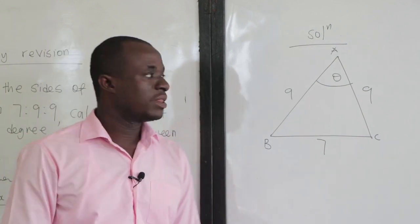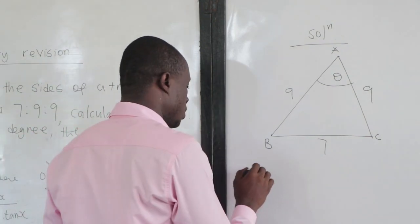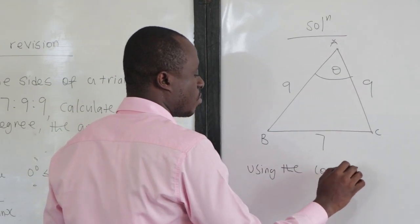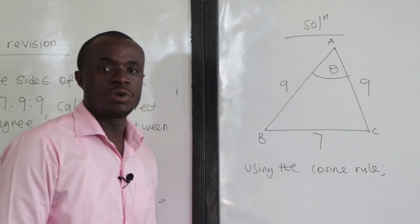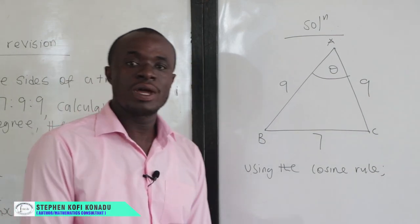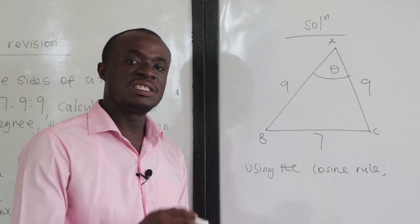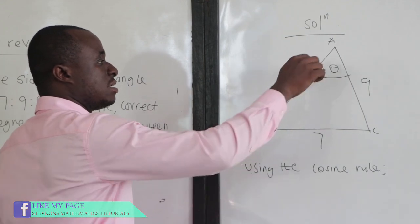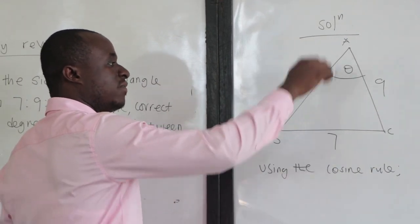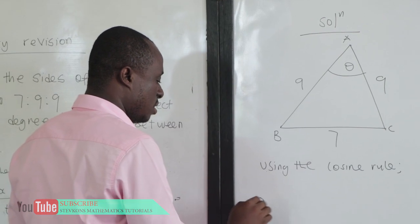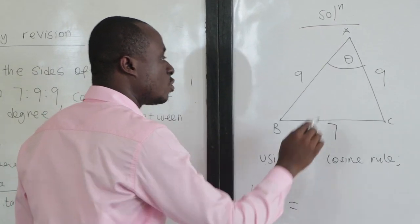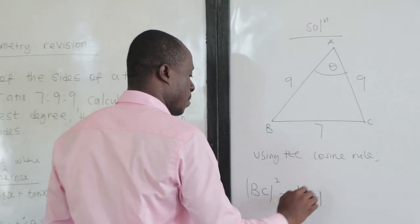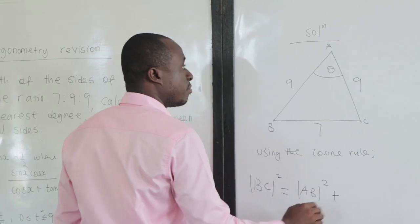Clearly, we can use the cosine rule. Now, when do we use the cosine rule? We use the cosine rule when we don't have a right angle triangle — that is, we don't have 90 degrees in the triangle. The cosine rule says that the side facing the angle squared equals the sum of the squares of the other two sides, so BC squared equals AB squared plus AC squared...